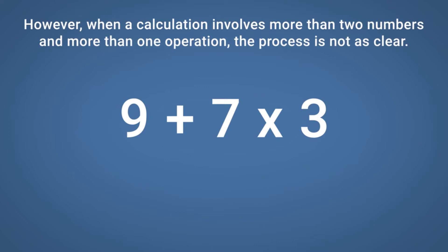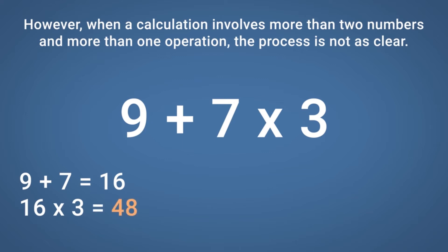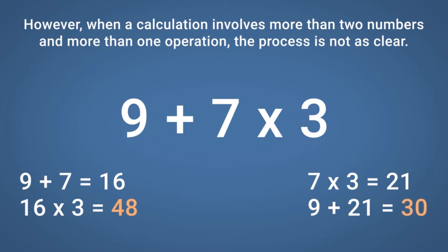For example, we could calculate this as 9 add 7 equals 16, then 16 multiplied by 3 equals 48, or we may calculate it as 7 multiplied by 3 equals 21, then 9 add 21 equals 30. Both methods have been calculated correctly, but only the second method gives us the correct answer.